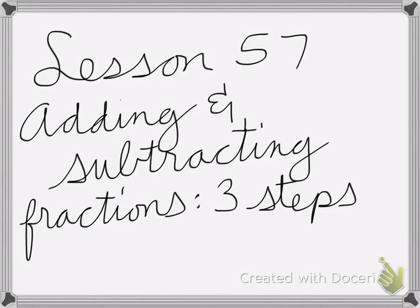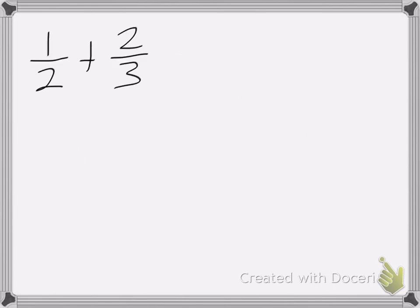All right, so lesson 57 is on adding and subtracting fractions and the three steps you take. Here we have 1/2 plus 2/3.